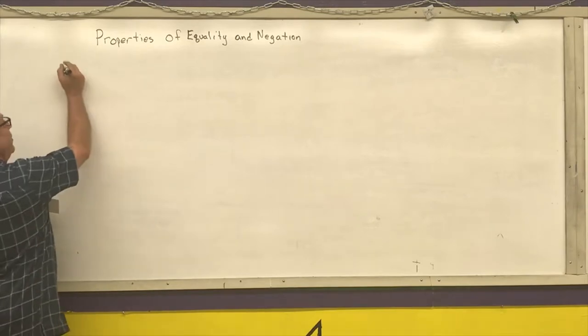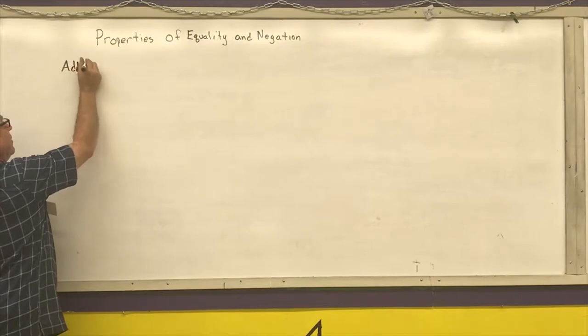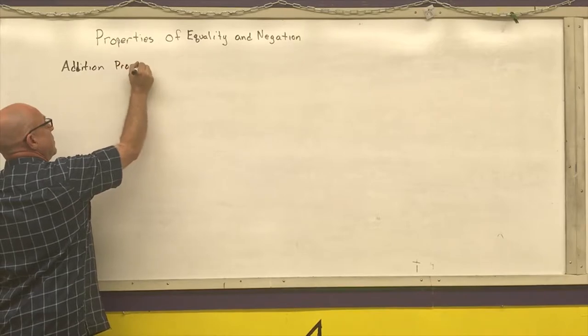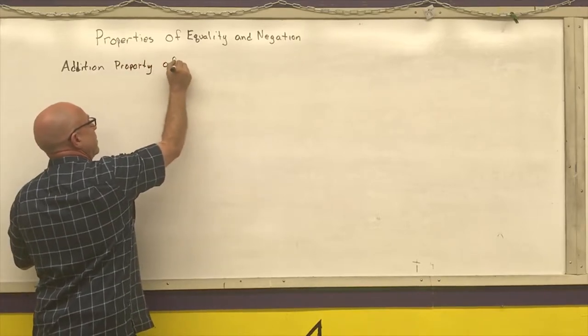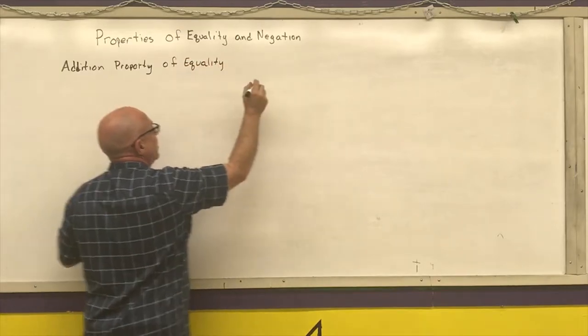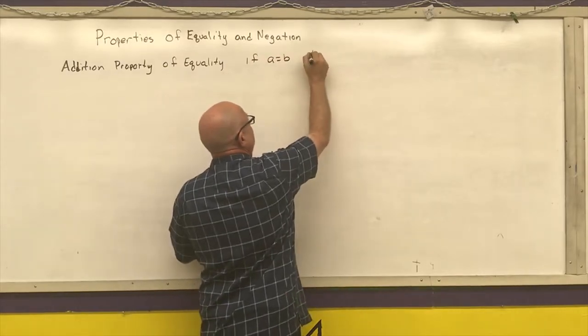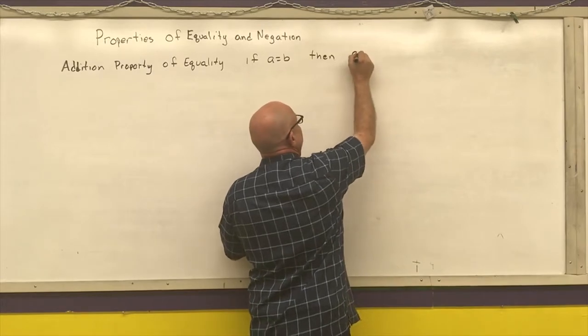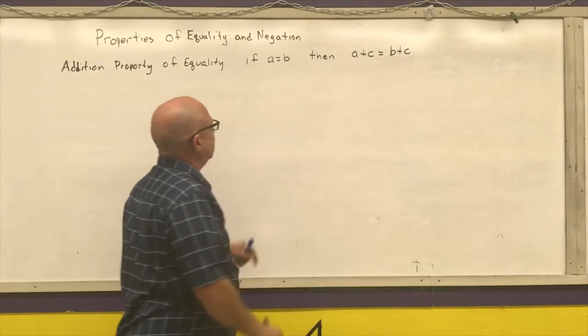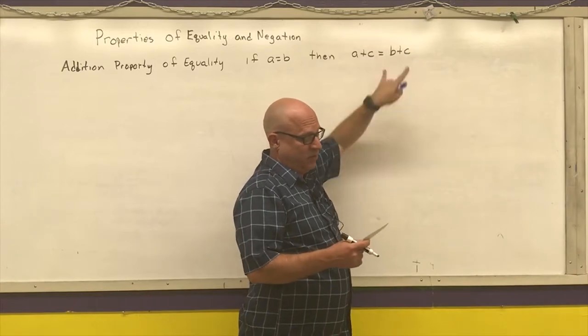So the first one I'm going to put down is the addition property of equality. So if A is equal to B, then A plus C is equal to B plus C. That says if I start out with something that's equal, I can add the same thing to both sides of an equation.